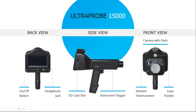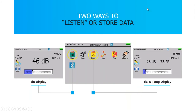Looking at the front: there's the spot radiometer, a laser pointer, and the camera with flash. The flash has been enabled as a strobe, so on newer Ultra Probe 15,000 units you'll see a strobe feature among the icons below the sensitivity bar — we can measure RPM using the camera flash. After powering up, the home screen is the first screen you'll see. From there, two ways to go out and listen or store data: the DB Display icon showing decibel level only, or DB and Temp showing both.